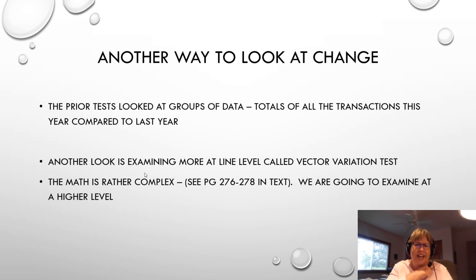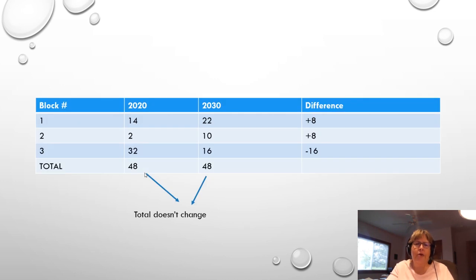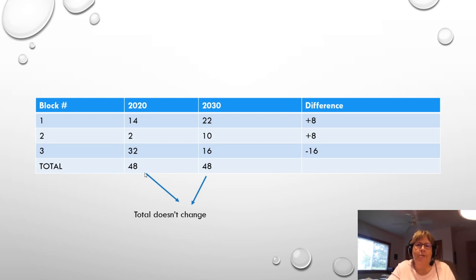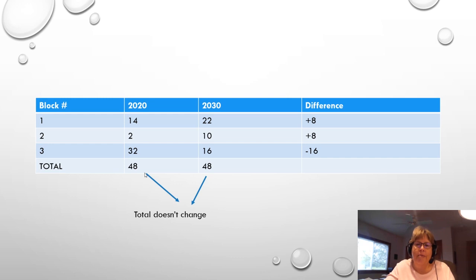Here's an example: let's say we have a town with a total population of 48 — a really small town with three blocks. When we do our 2020 census we have a total population of 48, and when we do our 2030 census we also have a population of 48. So at the macro level there's no change.